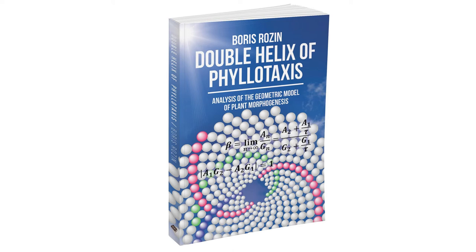Each primordium continuously moves from the center of inflorescence. Each primordium continuously grows, increases in size. The phyllotaxis pattern preserves the genetic spiral and constant angle of divergence.